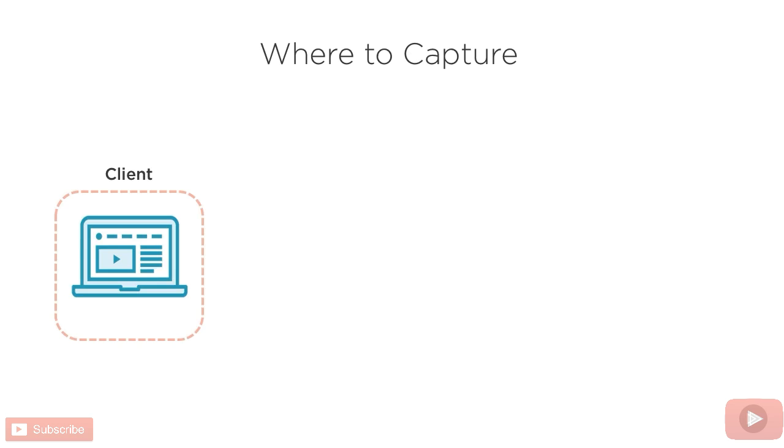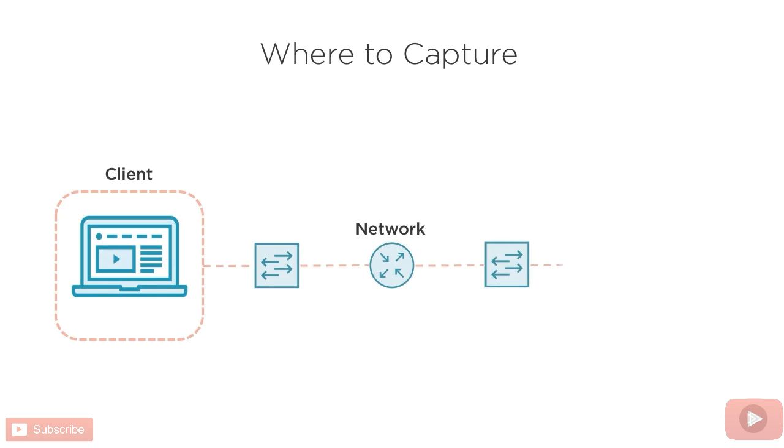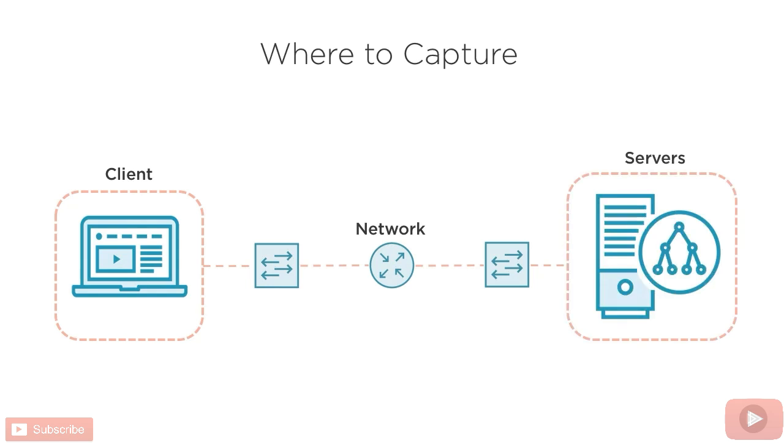For the next few minutes we're going to take a look at where to capture on the network. There are several points on a network path where we can collect data. The most common spots are at the client end, somewhere on the network infrastructure along the way using a span port or a tap, or at the server end.